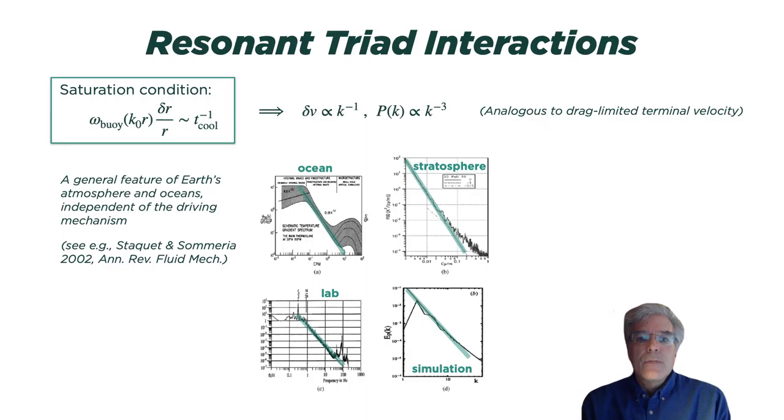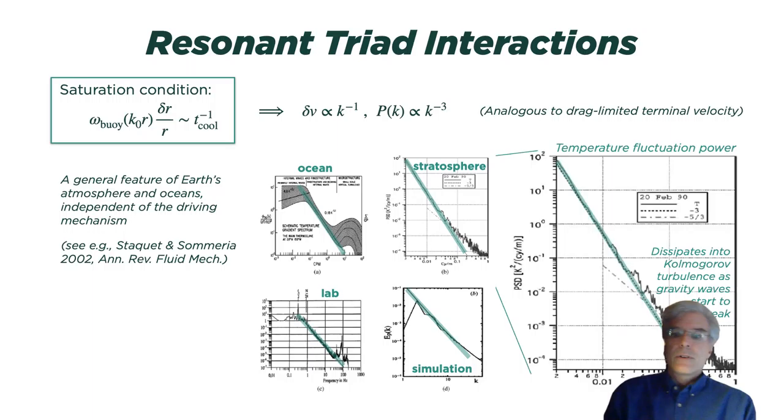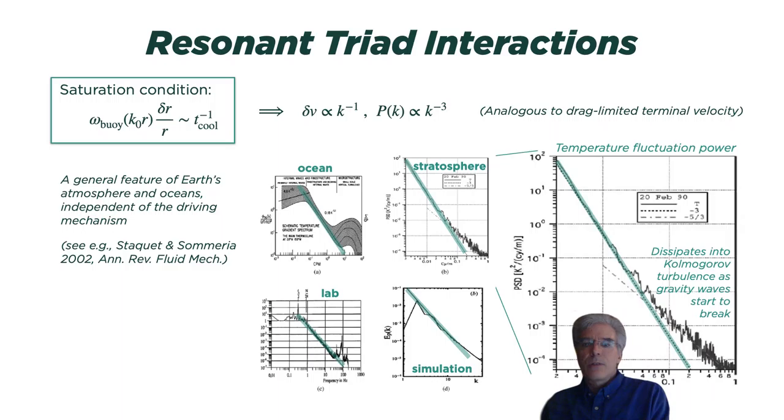And in the figure you can see power spectra that are k to minus three power spectra in the ocean, in our stratosphere, in lab experiments and simulations. And I want to blow up the stratosphere figure for just a minute to show you that in the stratosphere you get a power spectrum of temperature fluctuations. It's k to minus three for quite a ways until finally it shallows, it becomes shallower and becomes k to the minus five-thirds Kolmogorov when the gravity waves start to break. So ultimately the gravity wave energy turns into classical Kolmogorov turbulence. But before that happens it spends quite a while cascading down as gravity wave turbulence.